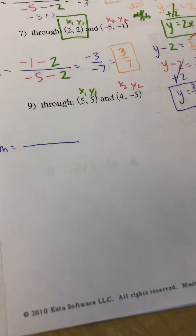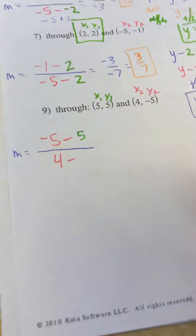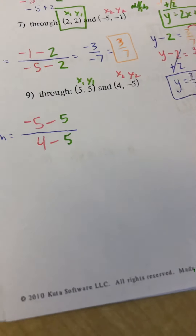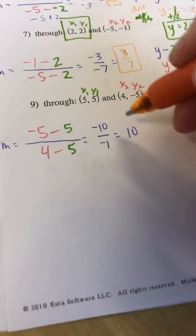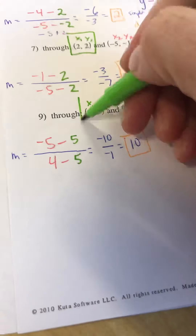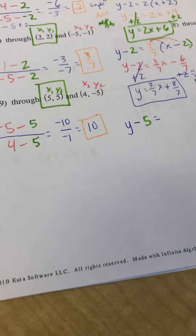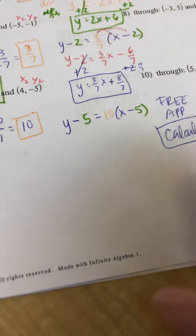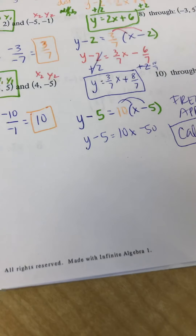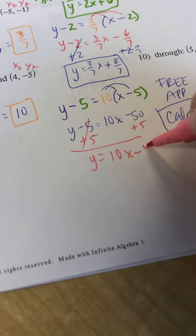Moving on — we've got y2, negative 5, minus our y1, positive 5. Our x2, 4, minus our x1, 5. When we do our math, we get negative 10 over negative 1, which is a positive 10 — that's our slope. Using that and my first point, y minus y1 equals m times x minus x1. We distribute to get y minus 5 equals 10x minus 50. Adding 5 to both sides gives y equals 10x minus 45.